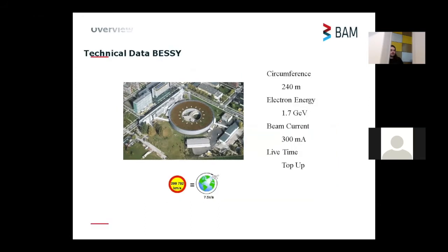Some technical data for BESSY. There's our beam line, the BAM line. Circumference of 240 meters, electron energy is 1.7 GeV, meaning the electrons are cycling nearly at the speed of light. We have a beam current of 300 milliampere, always filled up in top-up mode so we have very stable conditions.